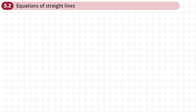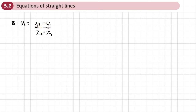This is the second section of chapter 5 on straight line graphs, and this section is on equations of straight lines. We already know from the previous section that we can write or work out the gradient of a line using the gradient formula by taking any pair of x and y coordinates. If we multiply both sides of this formula by x2 minus x1, that gives us m times x2 minus x1 equals y2 minus y1.